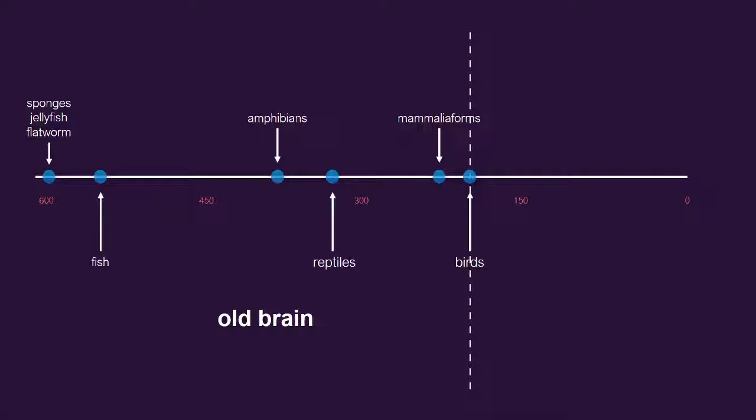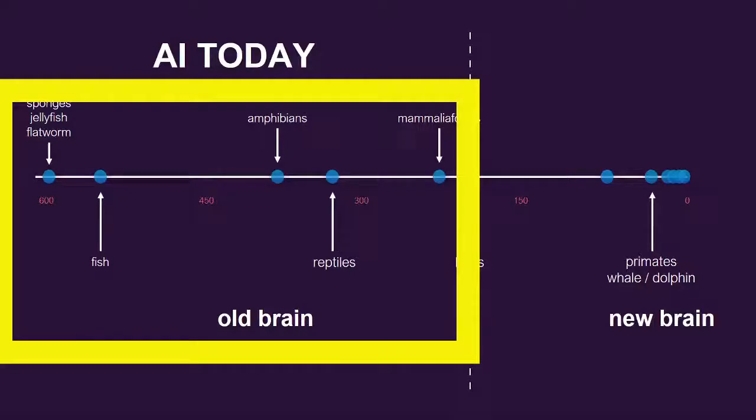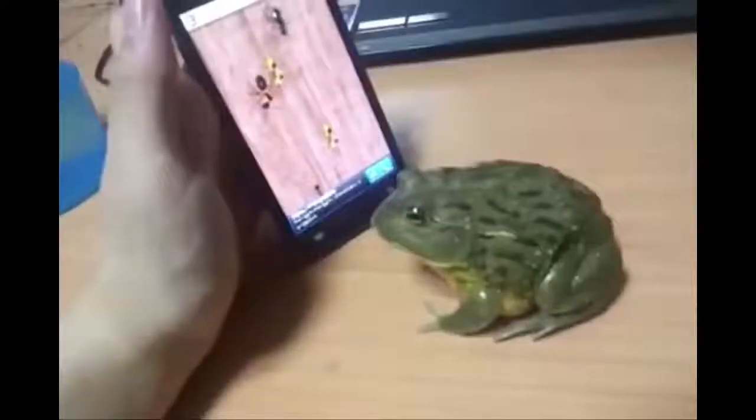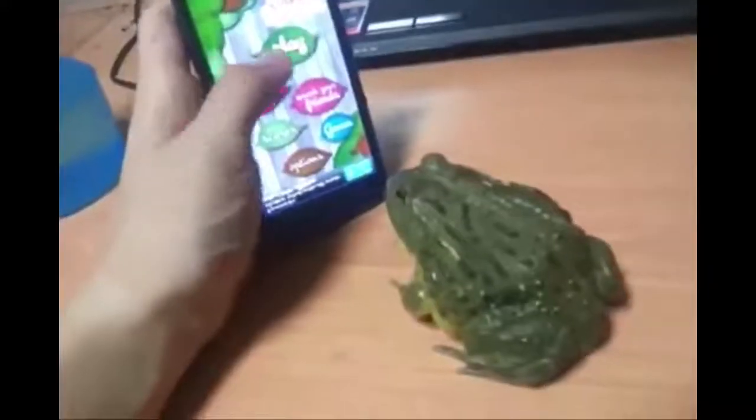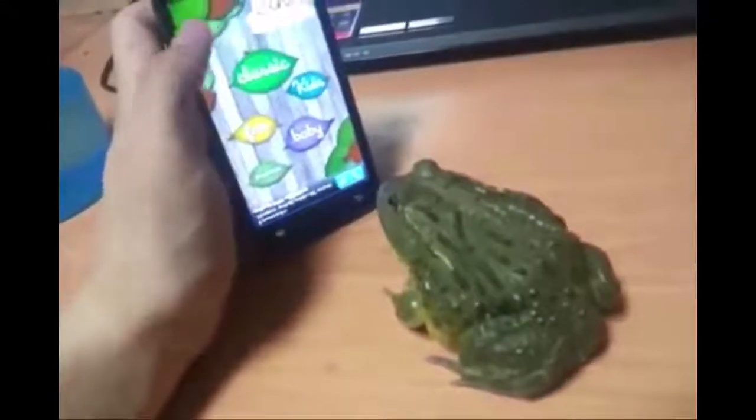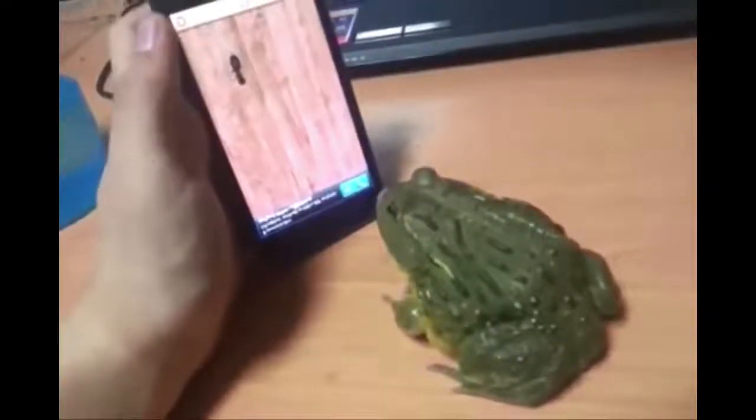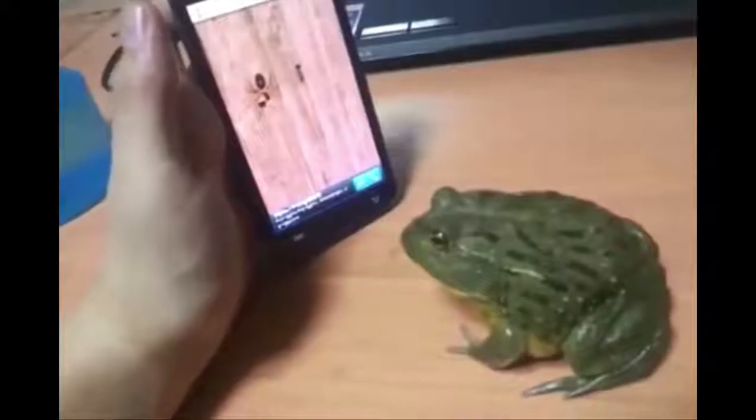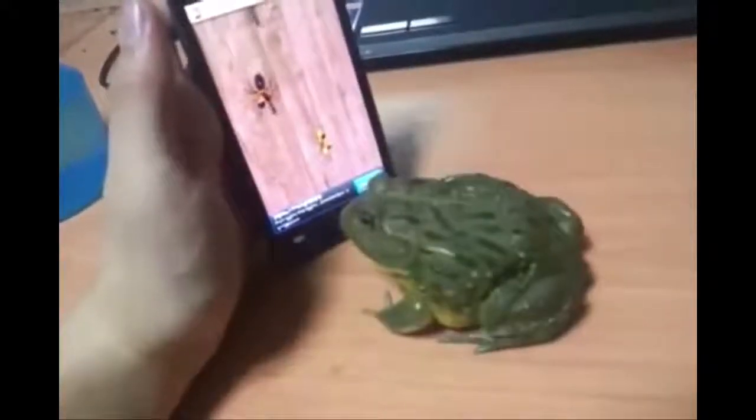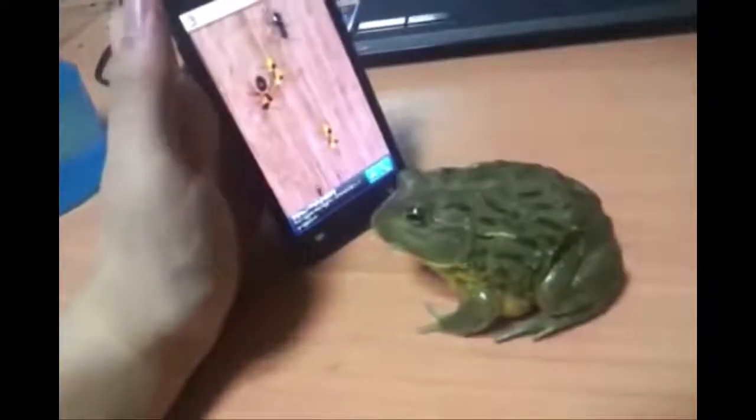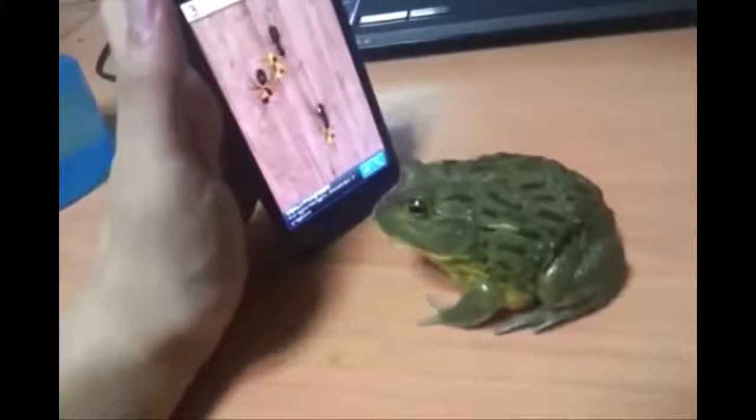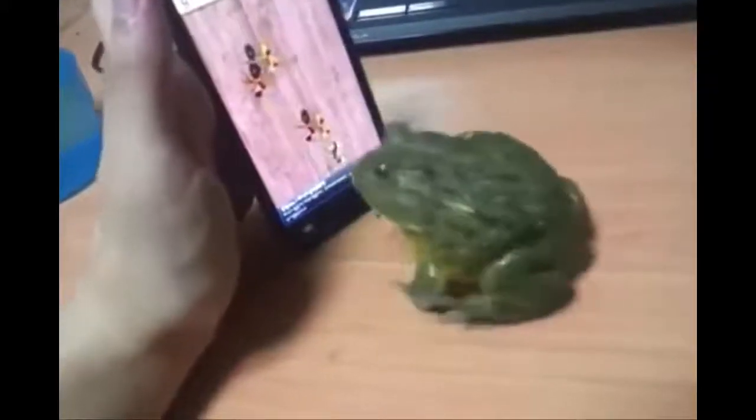All these animals that came before birds or humans, mammals, they all have this old brain and they can act without modeling the world. So here is an example of that. Here's a frog hunting for bugs. And so it would keep going at this. It is not getting any feedback from the world and it's not using any feedback. Even though it's not getting any nutrition out of that activity, it would keep going at it.